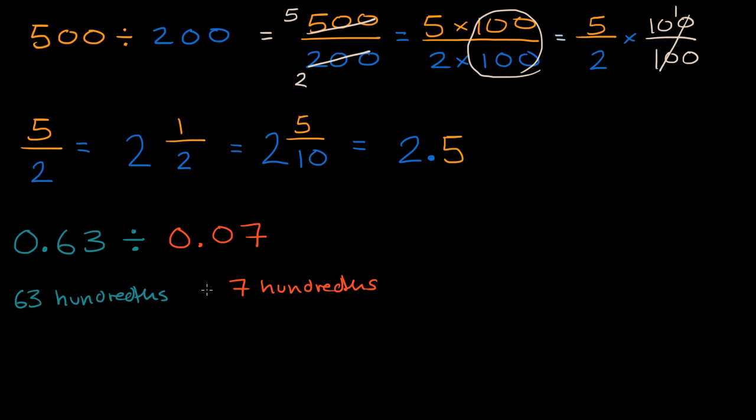And so if you have 63 of something and you're dividing that by seven hundredths, what are you going to get? Well, if you took your seven hundredths and you multiply it by nine, you're going to get 63 hundredths. And so 63 of something divided by seven of that same something is going to be equal to nine.